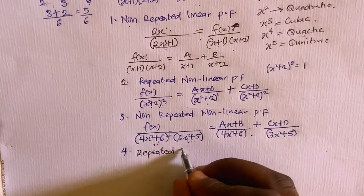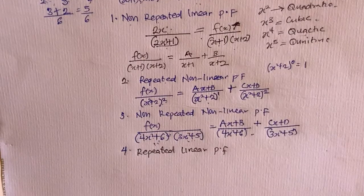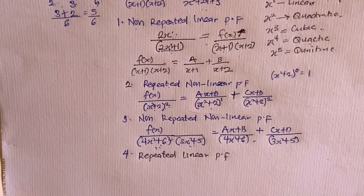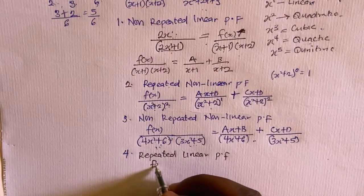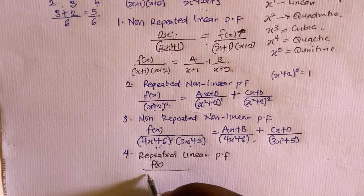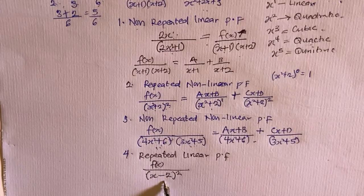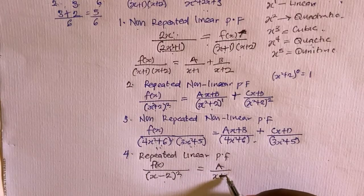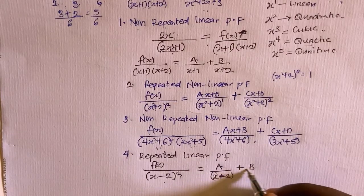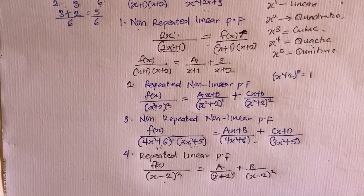The fourth form is repeated linear partial fraction. For example, f(x) divided by (x − 2)². The denominator is linear but raised to the power 2, so you repeat it twice: A over (x − 2) plus B over (x − 2) squared. This is repeated linear partial fraction.